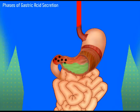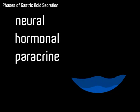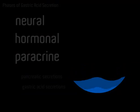During the intestinal phase, the presence of protons, high osmolarity, and nutrients in the intestinal lumen stimulates the three regulatory pathways — namely the neural, hormonal, and paracrine pathways — which in turn stimulate an increase in pancreatic secretions and inhibit gastric acid secretion.